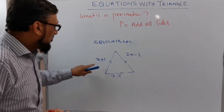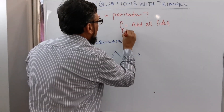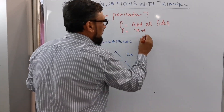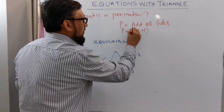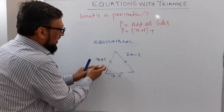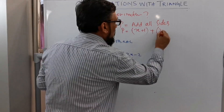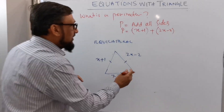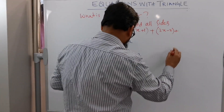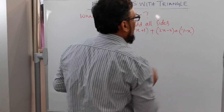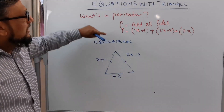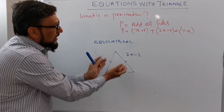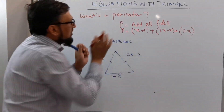So what I'm doing is writing: perimeter equals x plus 1, plus 2x minus 2, plus 7 minus x. This is the expression as per the given information — add all sides which equals the perimeter.